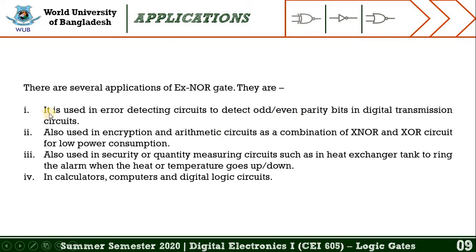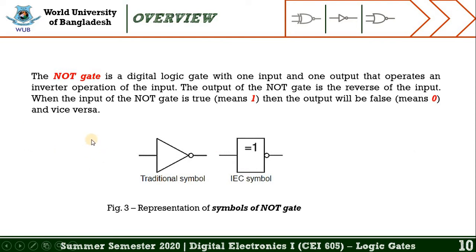There are several applications of the XNOR gate. It is used in error-detecting circuits to detect odd or even parity bits in digital transmission circuits. It is also used in encryption and arithmetic circuits as a combination of XNOR and XOR circuits for low power consumption. Additionally, it is used in security or quantity-measuring circuits such as in heat exchanger tanks to ring an alarm when heat or temperature goes up or down, and in calculators, computers, and digital logic circuits.